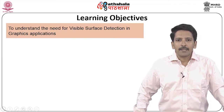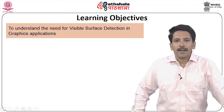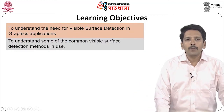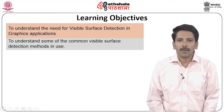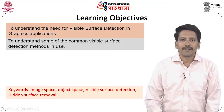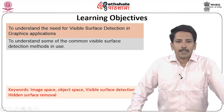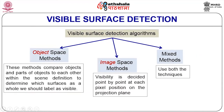The objectives of this module are to understand the need for visible surface detection in computer graphics applications, and to look at the common classes of visible surface detection methods. Some common techniques are used, and the keywords are: image space, object space, visible surface detection, and hidden surface removal. We can classify these visible surface detection algorithms as either object space, image space, or combining both — which we call mixed methods. So we have three classes: object space, image space, and mixed methods.